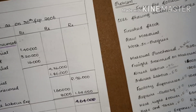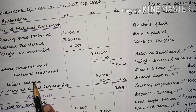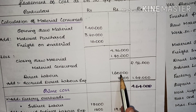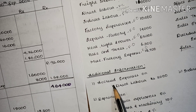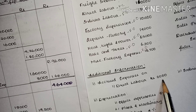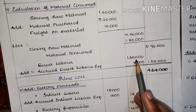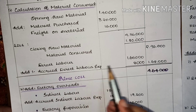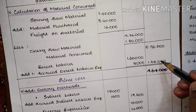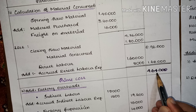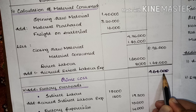The next item is direct labor: ₹1,60,000. From the additional information, accrued direct labor expenses are ₹8,000, which we add back. So total direct labor = ₹1,68,000. When you add material consumed (₹2,96,000) and direct labor (₹1,68,000) together, you get prime cost = ₹4,64,000. The initial stage of preparation of the statement of cost is over.